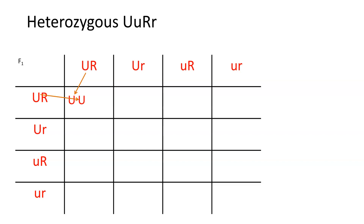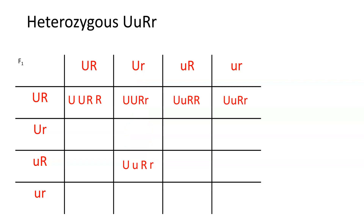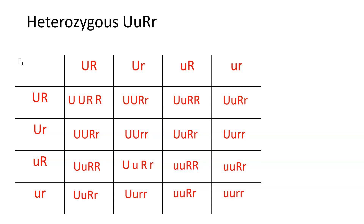So this would be UU, then we add the next characteristic, always starting with the capital letter, which would be RR. We take the capital U from the top followed by the lowercase u from the side, but the capital R from the side followed by the lowercase r from the top. By doing that, we always make sure we have these in the right order so they're easy to check and we don't get confused. I'm just going to fill in the others as we can look at how they fill out.